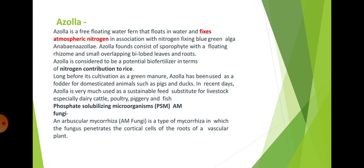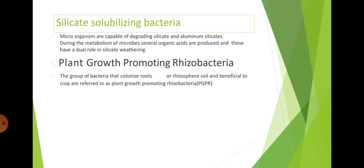Phosphate-solubilizing microorganisms, or PSM, and AM fungi, that is Arbuscular Mycorrhiza, are important biofertilizers. AM fungi is a type of mycorrhiza in which the fungus penetrates the cortical cells of the roots of a vascular plant. In silicate-solubilizing bacteria, microorganisms are capable of degrading silicate and aluminium silicates. During the metabolism of microbes, several organic acids are produced which have a dual role in silicate weathering. Plant growth promoting rhizobacteria, or PGPR, are a group of bacteria that colonize roots or rhizosphere soil and are beneficial to crops.